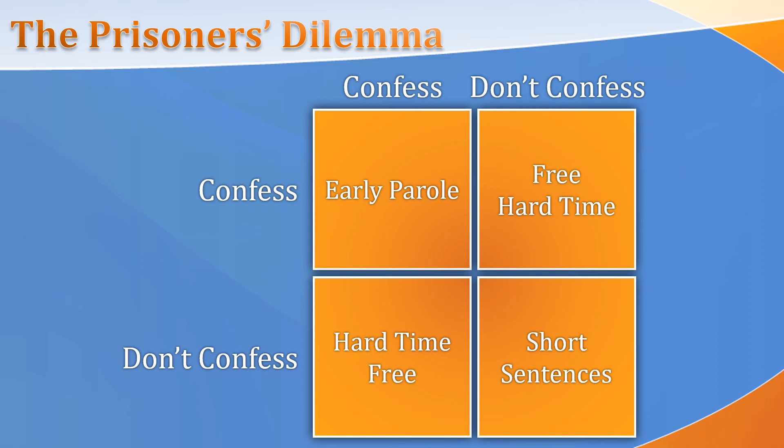Now we're going to try this out. Find somebody around you — a roommate, a parent, brother, sister, whoever's there. Take out two separate sheets of paper, or small bits of paper. Without indicating to the other person what you're going to choose, write down whether you're going to confess or not confess, and have the other person do the same. Once you've both written down your choice, reveal them to each other to see what would have happened.